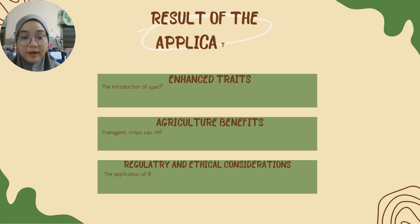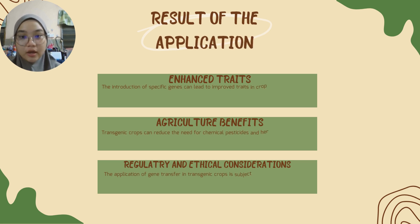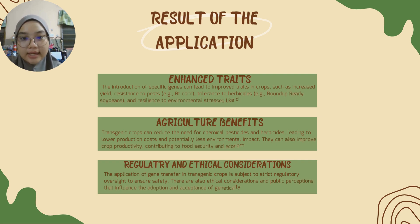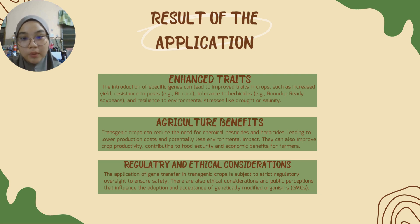Results of the application. Firstly, enhanced traits. The introduction of specific genes can lead to improved traits in crops such as increased yield, resistance to pests, tolerance to herbicides, and resilience to environmental stress like drought or salinity. Second, agricultural benefits. Transgenic crops can reduce the need for chemical pesticides and herbicides, leading to lower production costs and potentially less environmental impact. They can also improve crop productivity, contributing to food security and economic benefits for farmers.